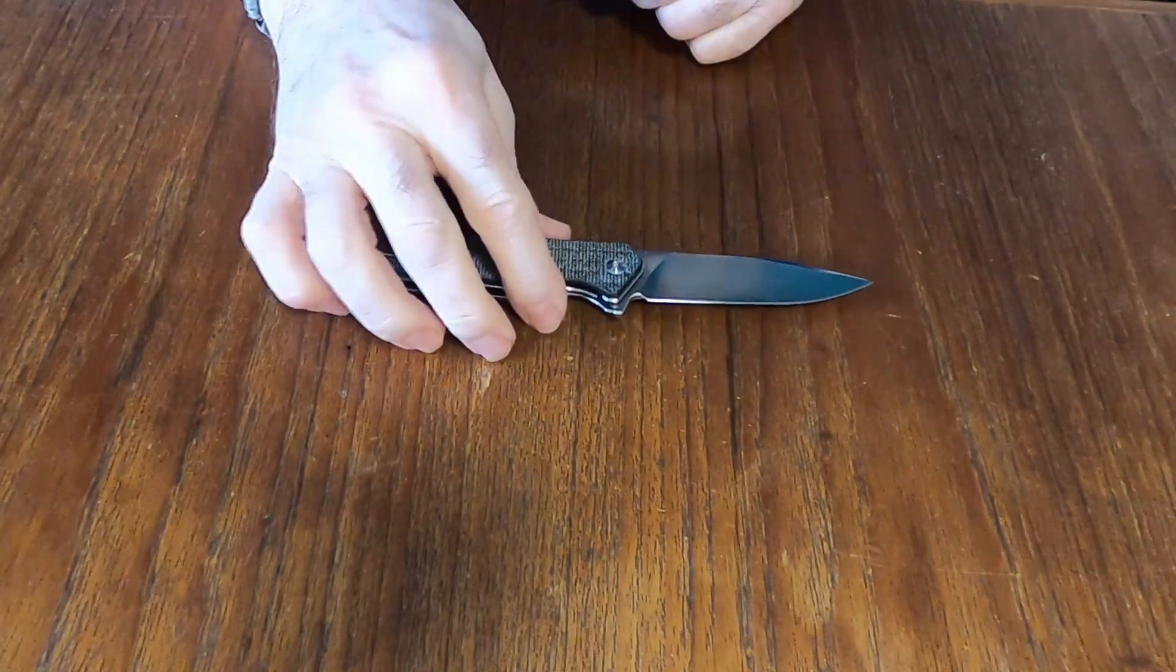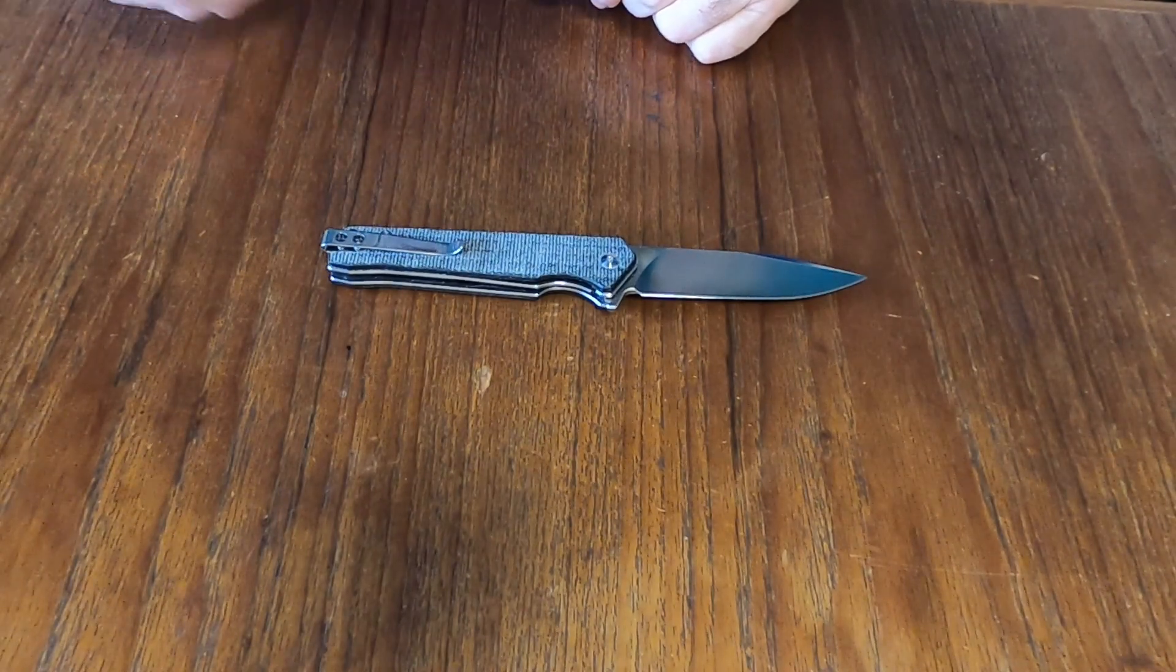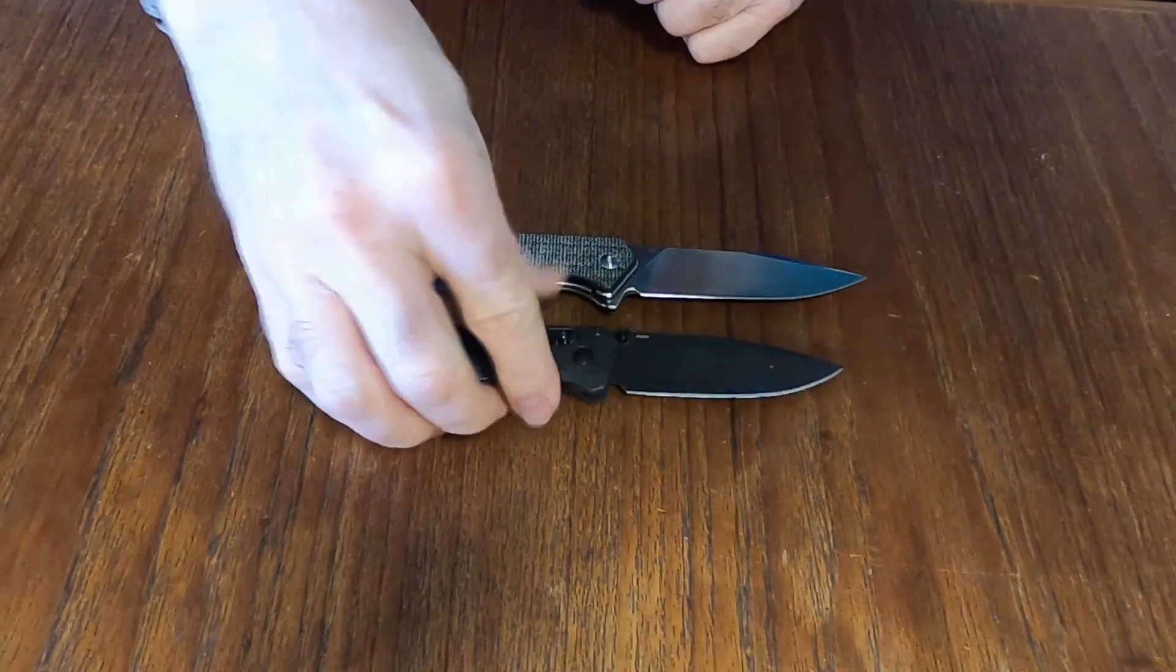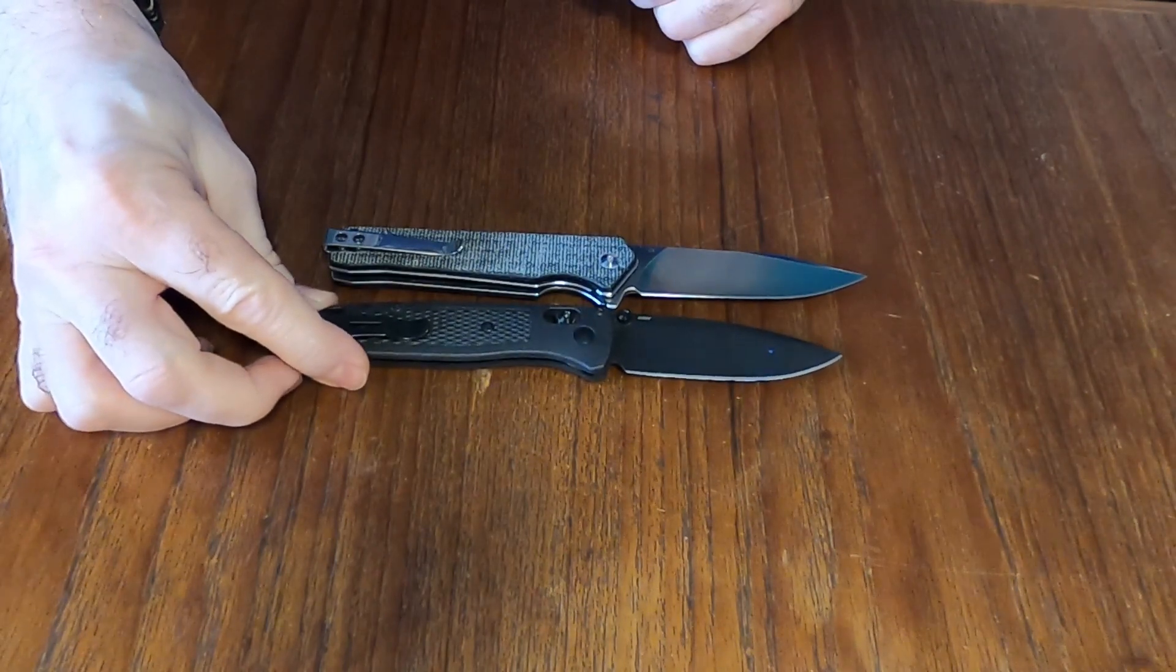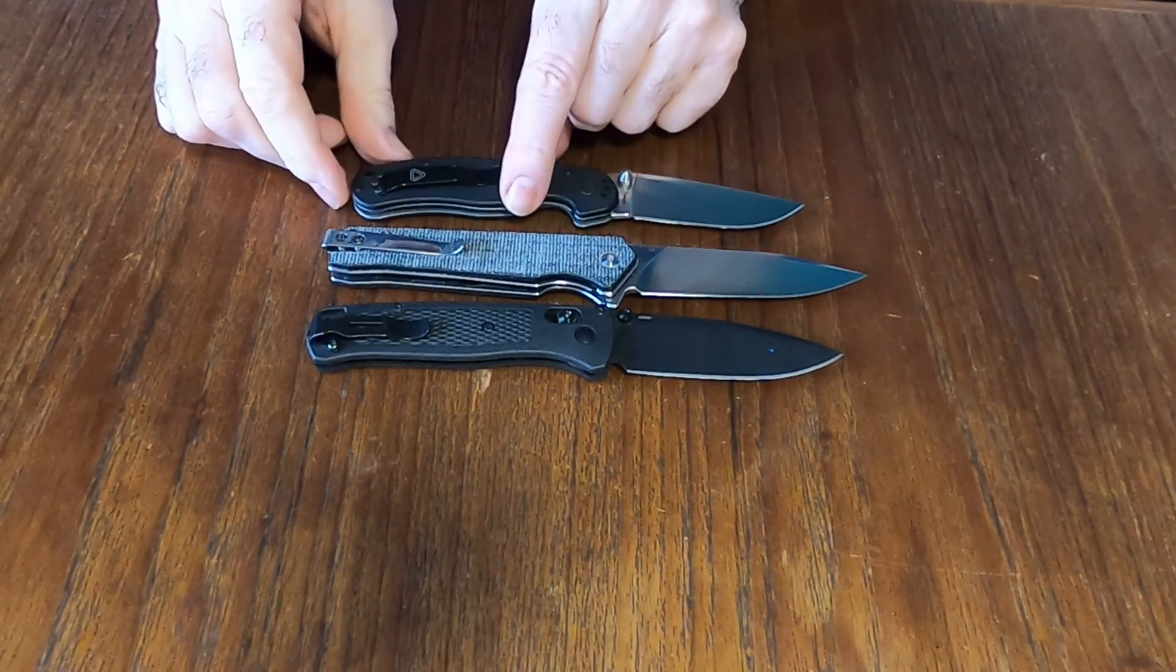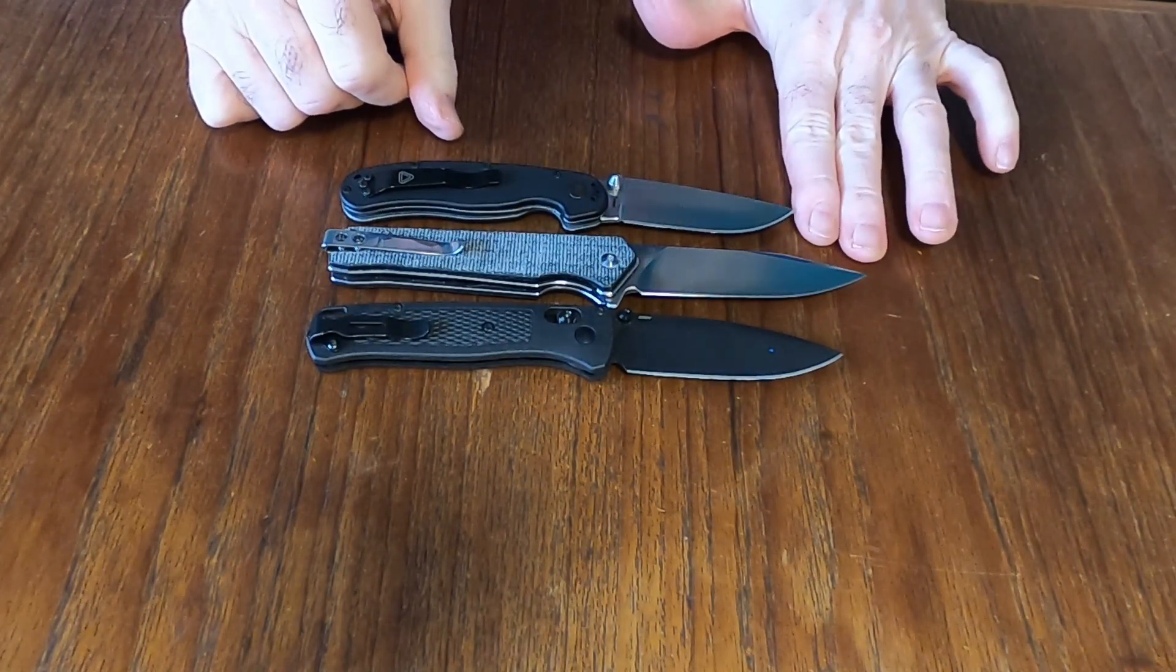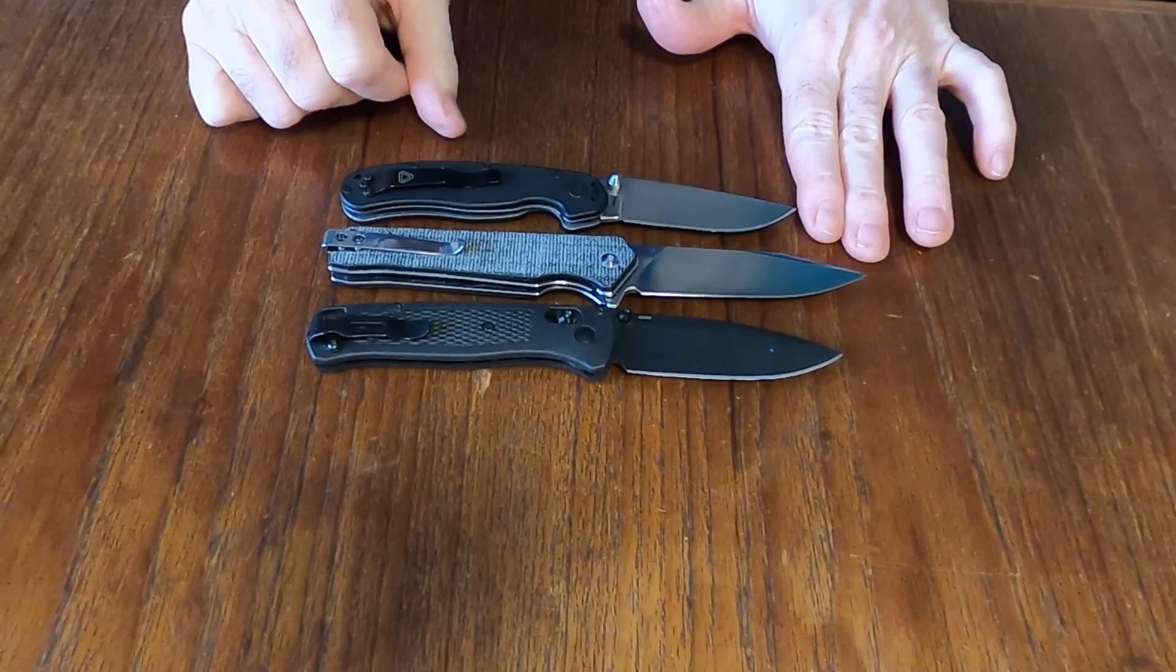So size comparison. This is a bigger knife at eight inches. You've got the Benchmade Bugout, you can see it is slightly shorter, same with the Ontario Rat 2. Almost two finger lengths, pretty close.